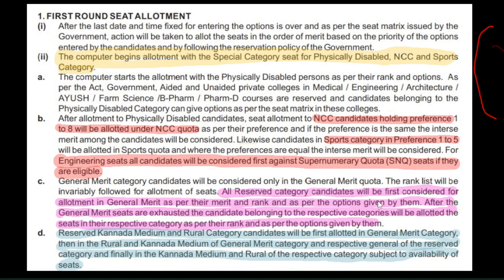All reserve candidates will first be considered for allotment in general merit. You will first try allotment in general merit. You will rank in general merit. You will mostly get general merit. Then you cut off by category if you cannot get the college in general merit.